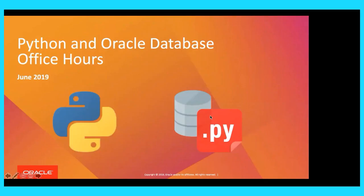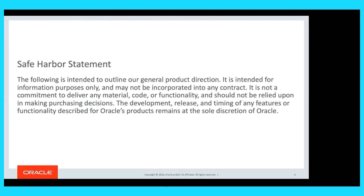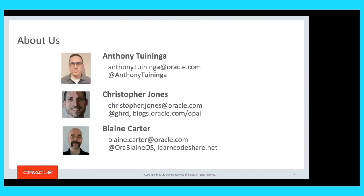Welcome to the June Python and Oracle Database Office Hours. This is an ask-me-anything kind of session — pretty much anything goes. On the session today we have Anthony Turninger, the creator and maintainer of the CX Oracle Database API for Python; myself, Product Manager, doing some of the back-end work keeping everything ticking along; and Blaine Carter, one of our evangelists here in the open source space.